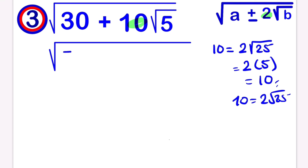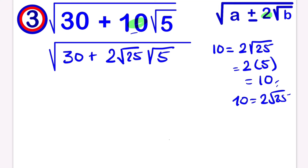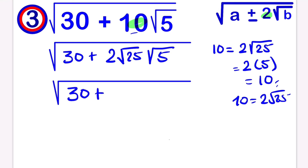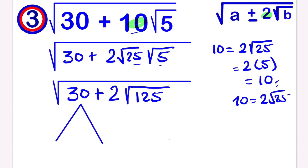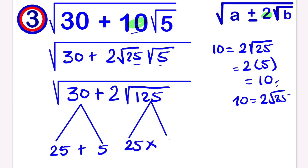So we are going to have 30 plus, and instead of 10, we write 2 root 25 times root 5. Moving further, this gives us 30 plus 2 times the square root of 125, since 25 times 5 gives us 125. We still have to think of two numbers that when added give us 30 and when multiplied give us 125. The two numbers are 25 and 5: 25 plus 5 is 30, and 25 times 5 gives us 125.